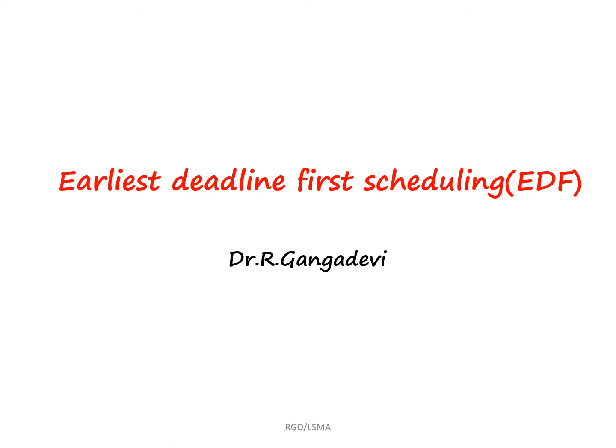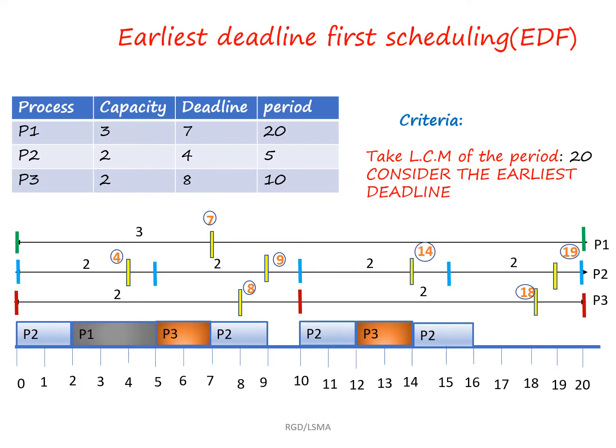In this algorithm, the process is going to follow the earliest deadline. In the previous algorithm which I taught — the Rate Monotonic algorithm — we assign processes based on priority. But in the Earliest Deadline First scheduling algorithm, we assign processes based on the earliest deadline.